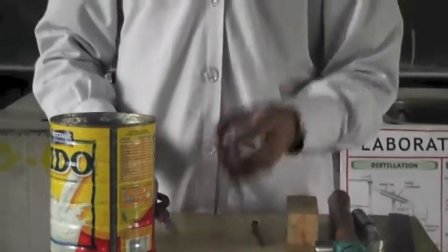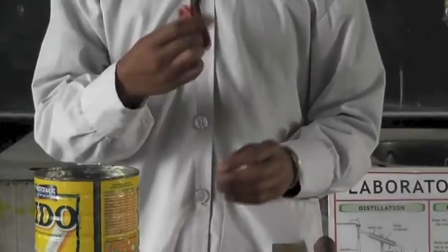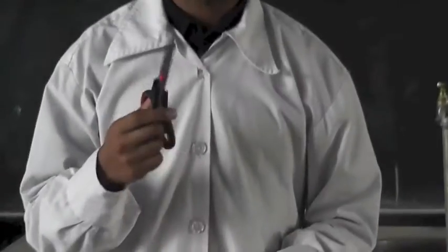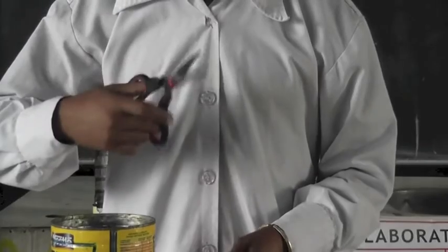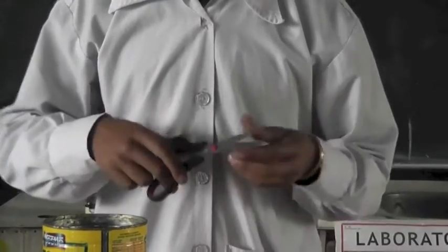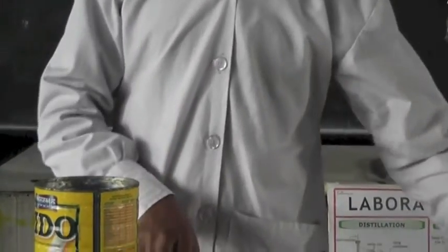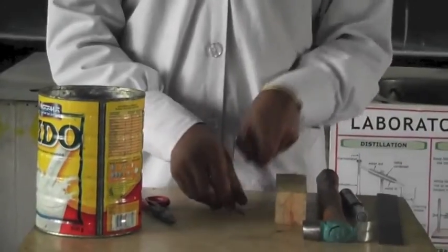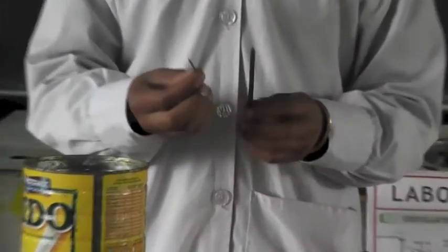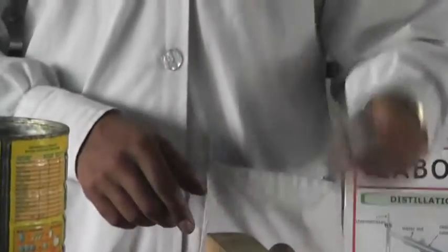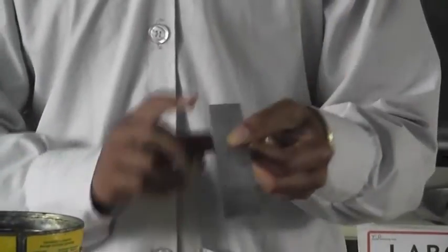Materials we need: we need a can, we need scissors, metal scissors. This is paper scissor, important for cutting paper only, so we don't need this. We need only metal scissors. We need nails, different size nails. We need a hammer. We need a marker. And finally we need a ruler, roulette.